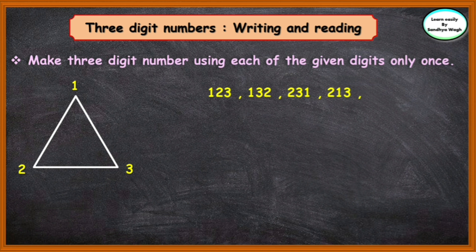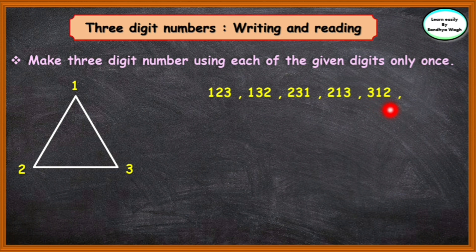Now, let us take 3 in hundreds place. The number will be 3, 1, 2 — that means 312. Now, to form the next three-digit number, let us interchange the tens place and the ones place. So the number will be 3, 2, 1 — that means 321.